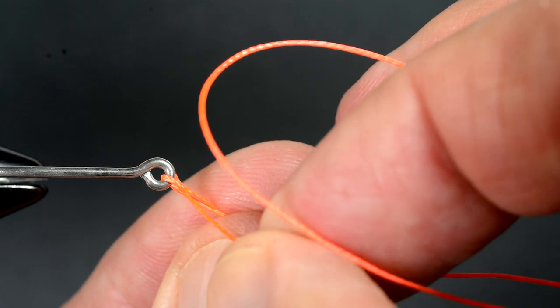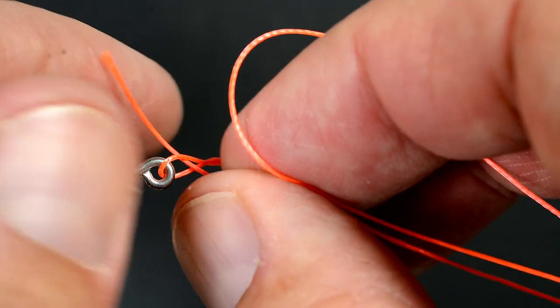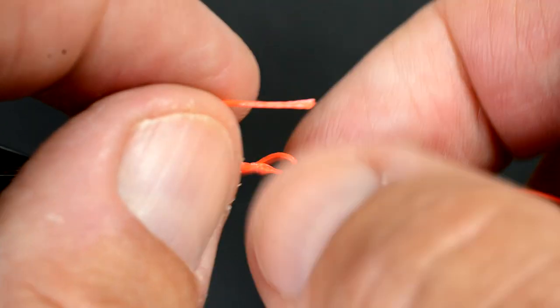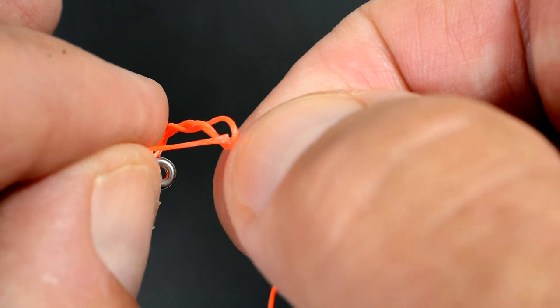Bring the end of the line back through the first loop formed behind the eye, then through the rear loop you just created.